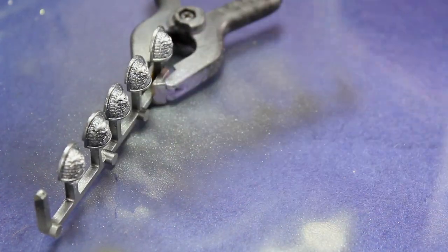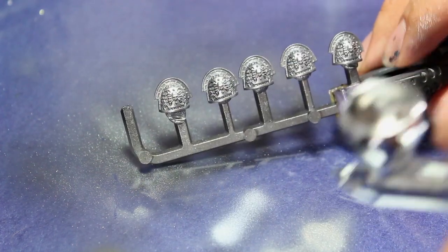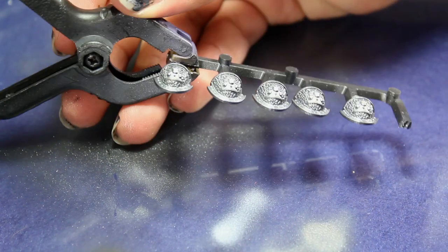Once that base coat was dry, I went in with some Vallejo silver and gave them a coat with the silver.